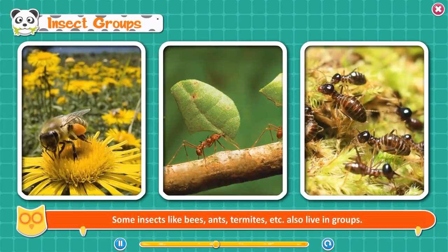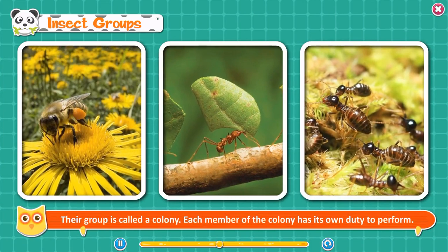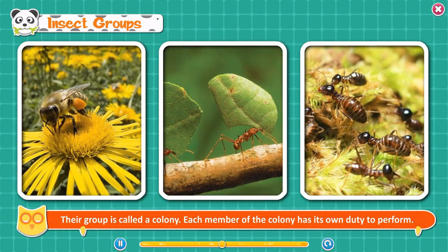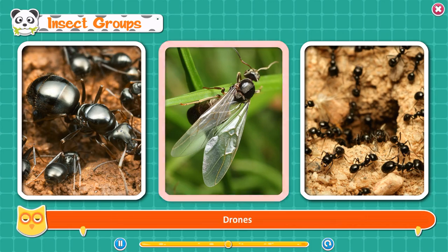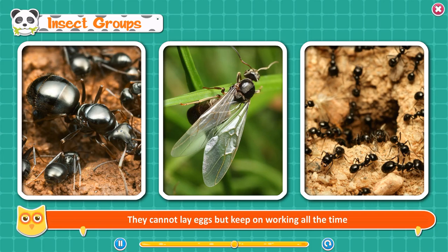Insect Groups. Some insects like bees, ants, and termites also live in groups called colonies. Each member of the colony has its own duty to perform. Ants live together in a group having a Queen — she is the leader whose only job is to lay eggs. Drones are males who help in reproduction. Around 50,000 female workers are there in a colony — they cannot lay eggs but keep working all the time to care for the eggs and to collect food for the entire colony.